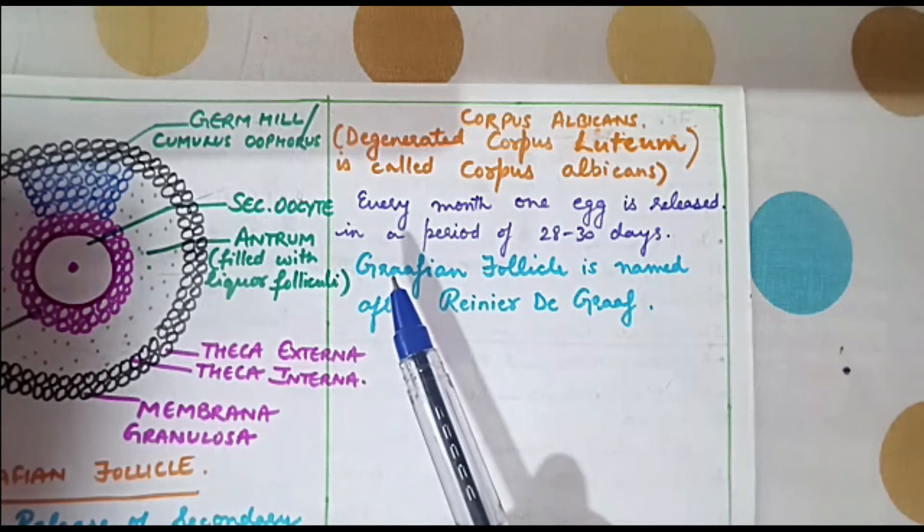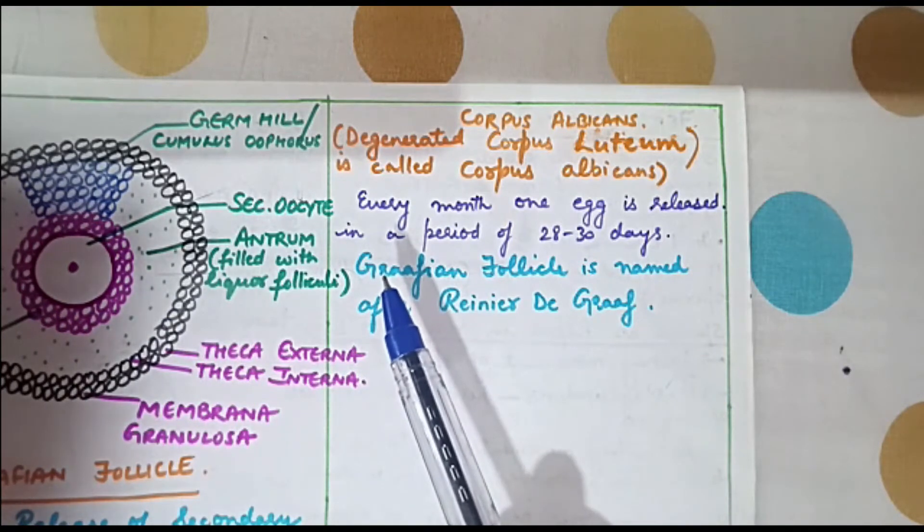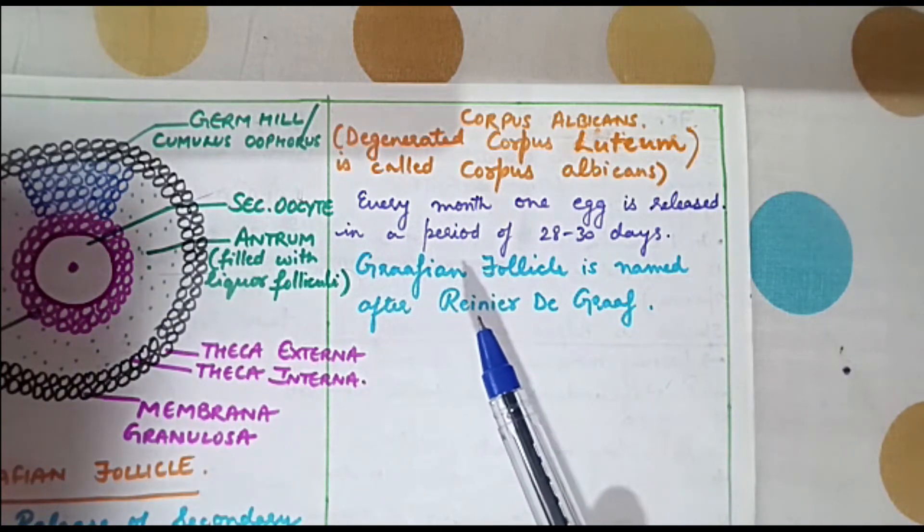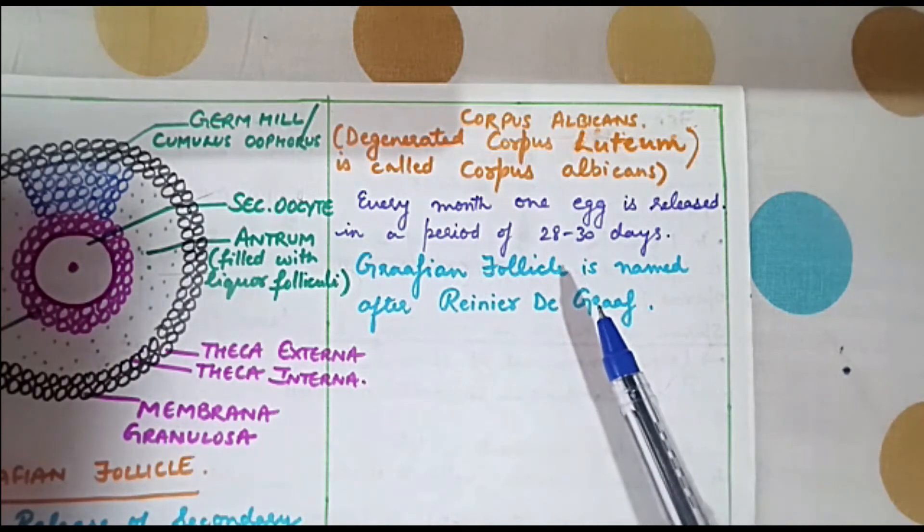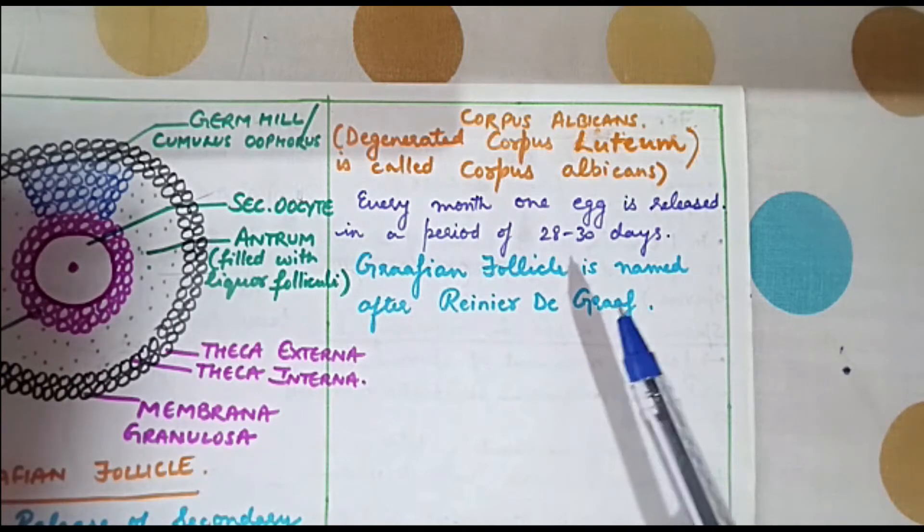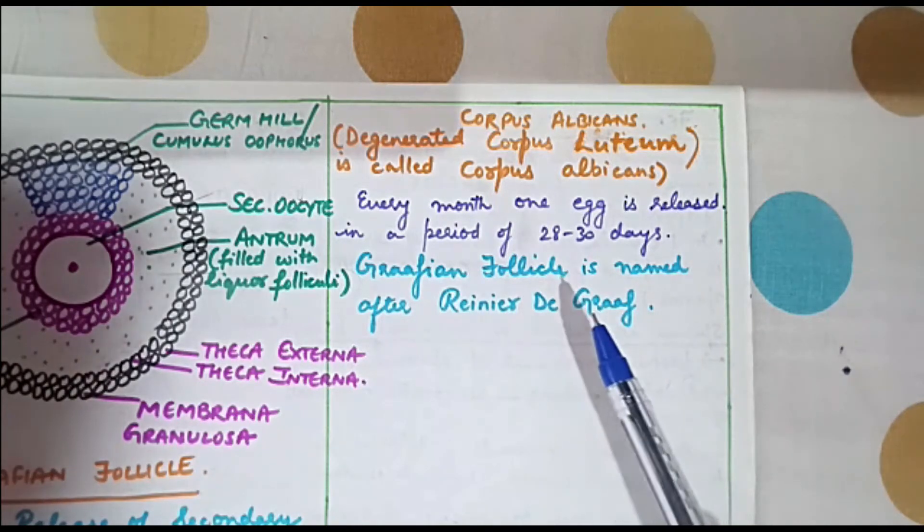Graafian follicle is named so because it was discovered by a scientist named Reinier de Graaf. So the word Graafian is derived from the last name of Reinier de Graaf.